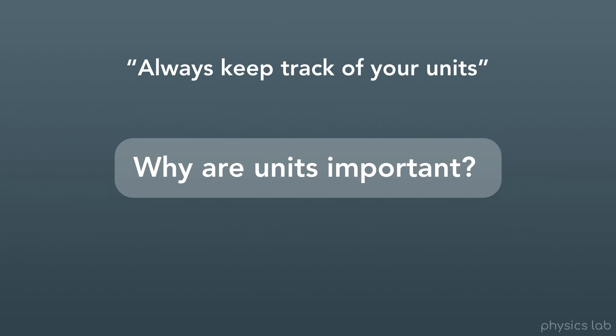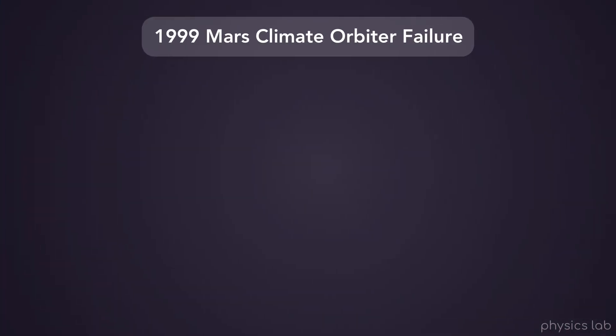So you've probably been told before to always keep track of your units. So why are units important? Well, the 1999 Mars Climate Orbiter failure is a pretty good example. The Mars Climate Orbiter was a space probe made by the American aerospace company Lockheed Martin and launched by NASA with the goal of orbiting Mars in order to study the Martian climate and atmosphere.